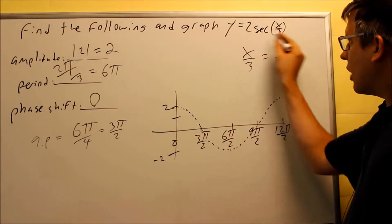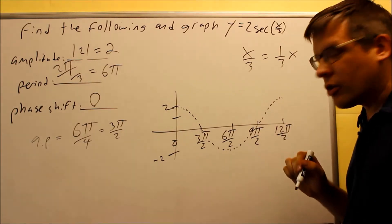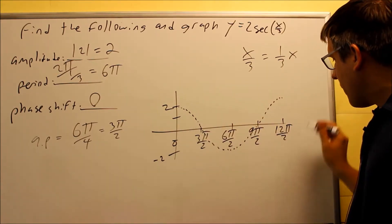So cosine we're doing first, because again, we know that secant is the same thing as 1 over cosine. So we have that one we'll do.